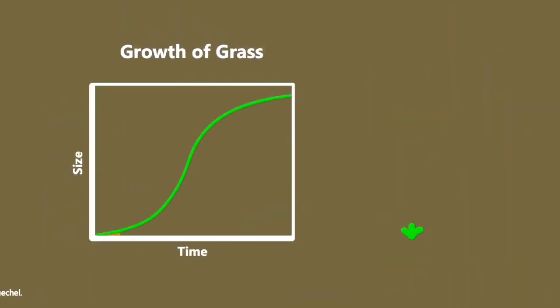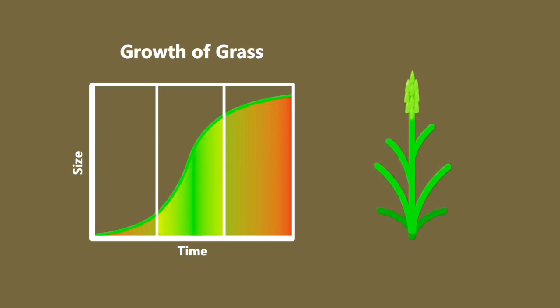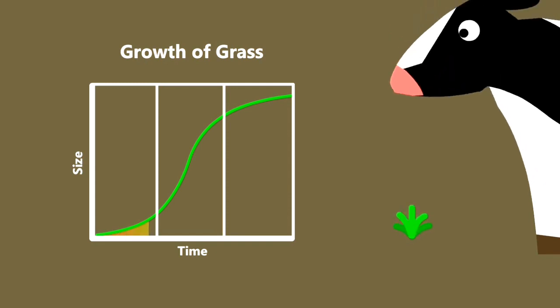The growth of grass tends to start slow, accelerate, and slow down again. This middle area is where it accrues the most biomass the most efficiently. If it's eaten before it gets to this point, its growth will never speed up.